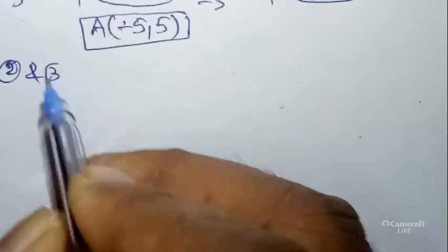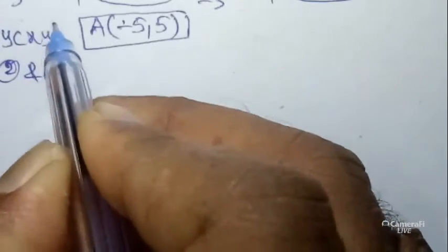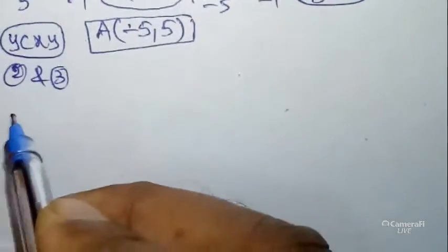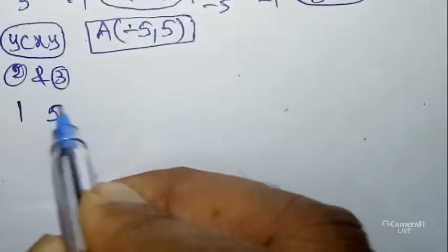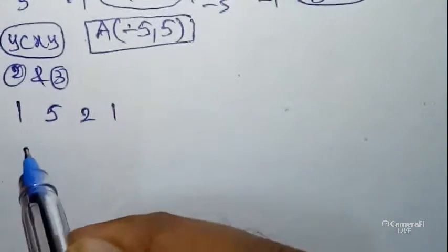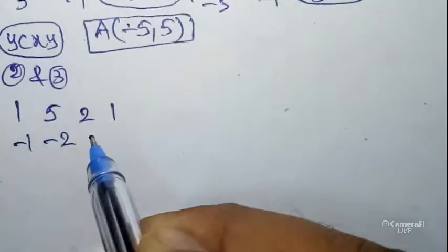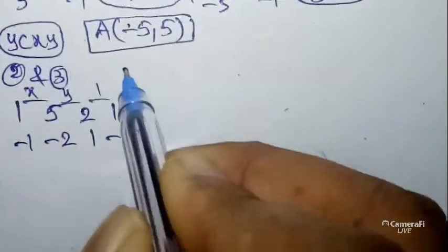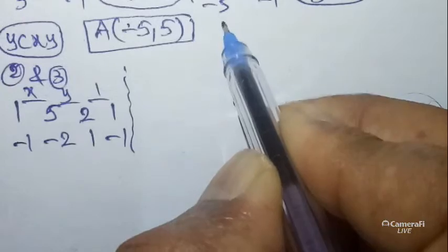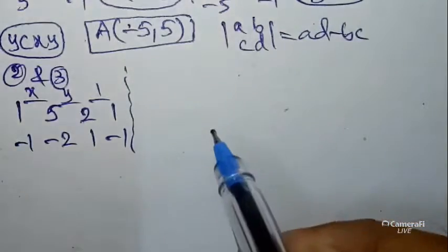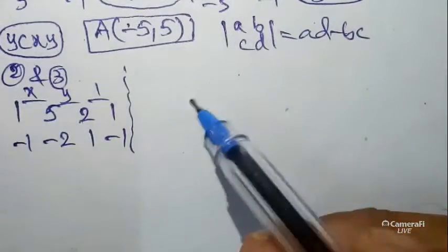Next, solve equations (2) and (3) to get point B. Remember the logic: y, c, x, y. From equation (2): y-coefficient = 1, constant = 5, x-coefficient = 2. From equation (3): y-coefficient = -1, constant = -2, x-coefficient = 1. Write in x-y-e format and apply the determinant formula: [a b; c d] = ad - bc, from the matrices determinant concept.